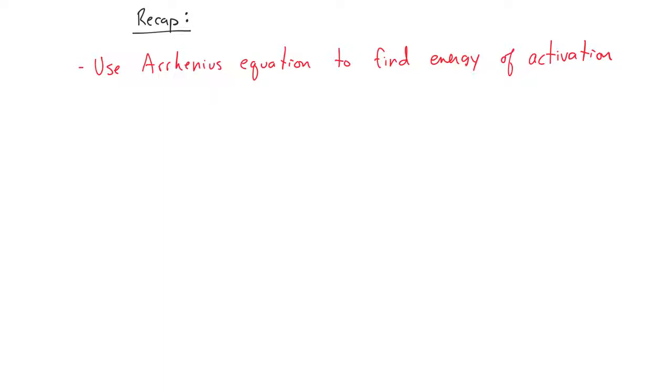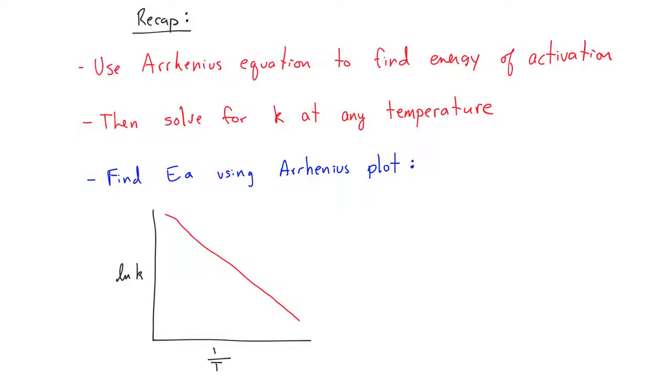So to recap, we can use the Arrhenius equation to find the energy of activation for a reaction. And once we know that, we can solve for the rate constant at almost any temperature. And finally, we can solve the energy of activation using what's called an Arrhenius plot. This is where we use a graph with the y-axis labeled as the natural log of the rate constant, and the x-axis is going to be 1 over temperature. And the slope of this is going to be negative Ea over R. And so in order to find the energy of activation, we just have to multiply this times R, which is 8.314 joules per mole per kelvin. And then we can solve for the energy of activation graphically.